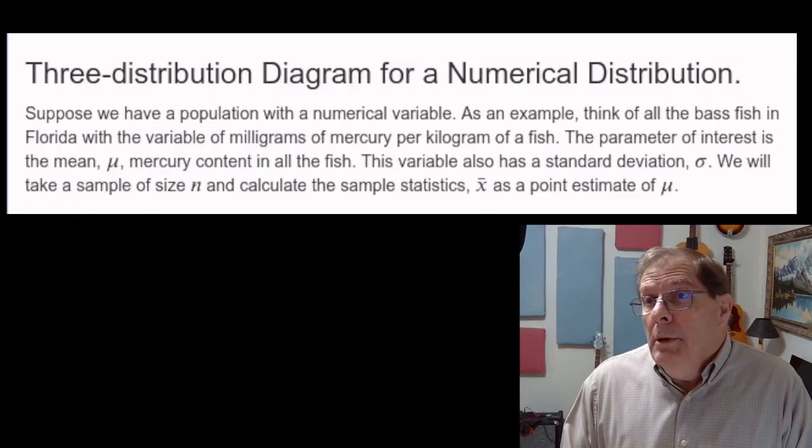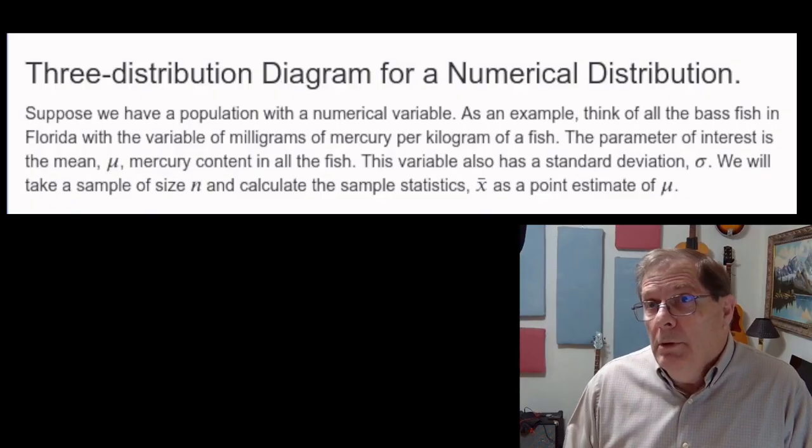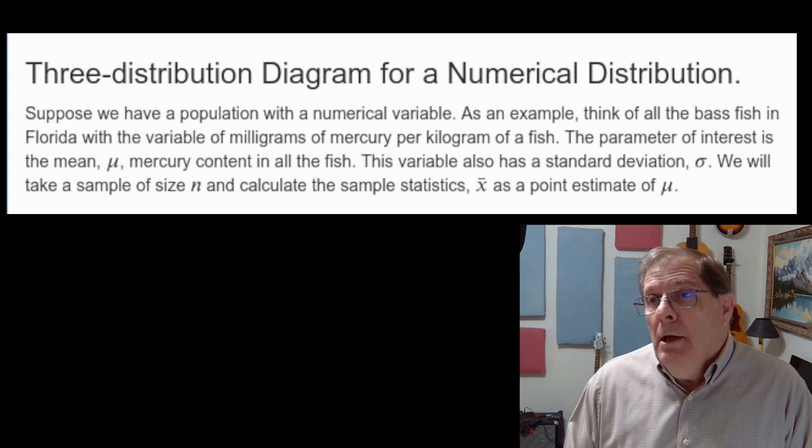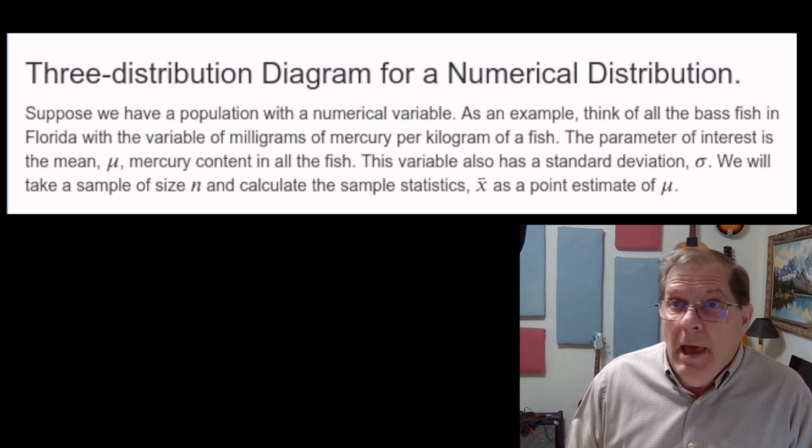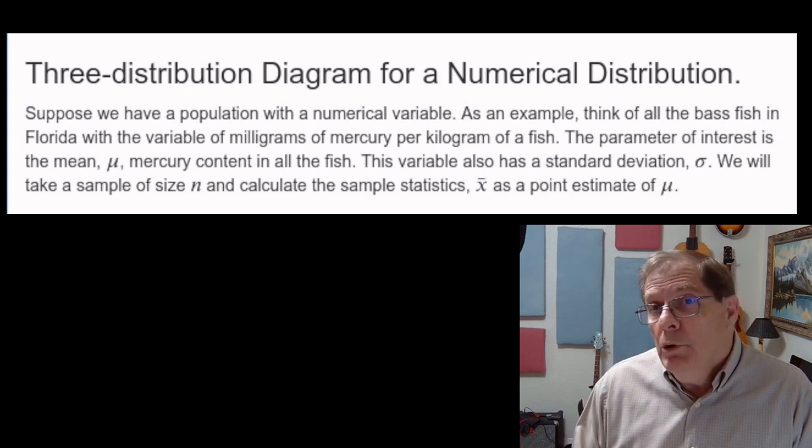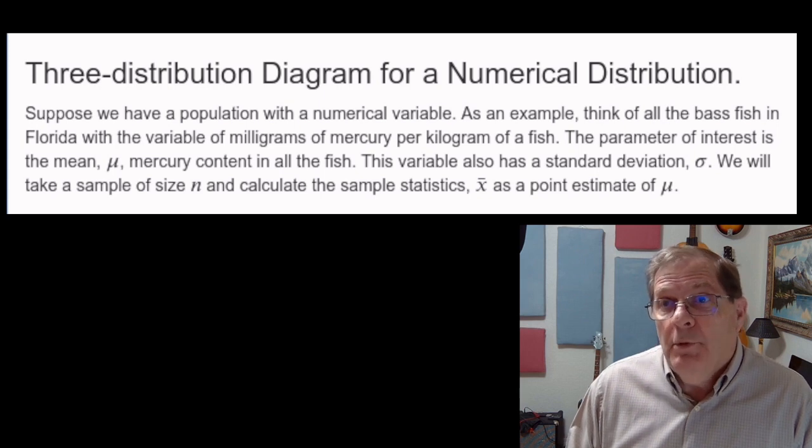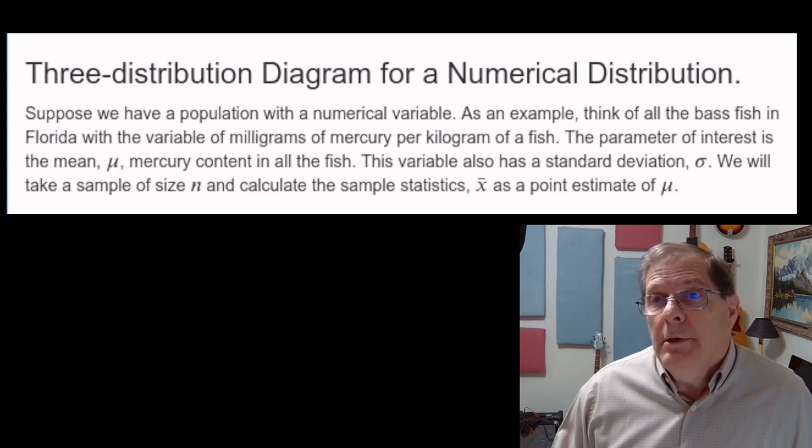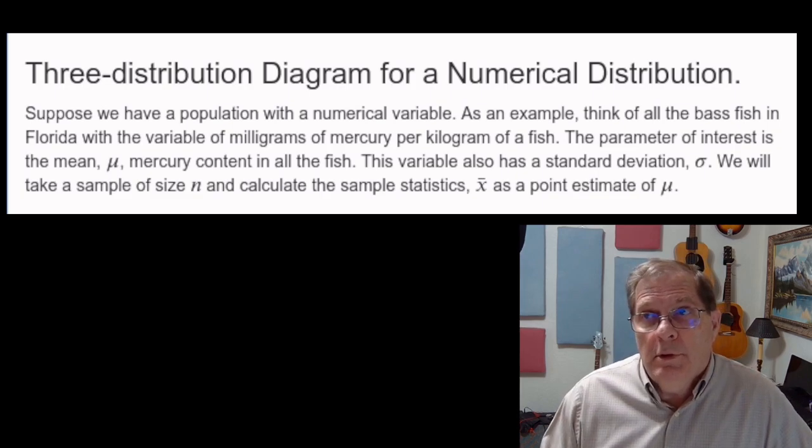Then we could easily take a sample of size N and calculate the average mercury content in that sample. That would be a point estimate for the parameter that we're looking for.